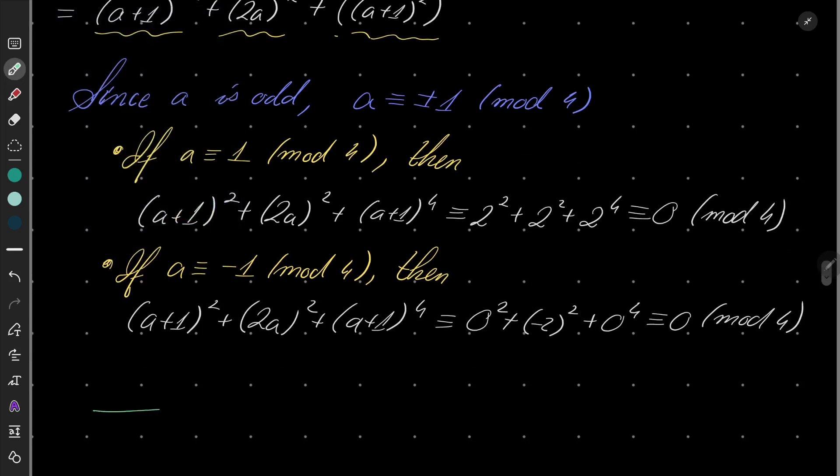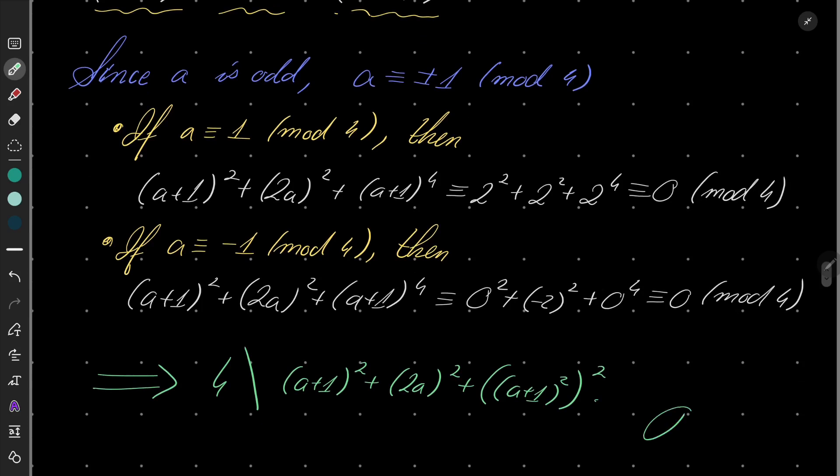which exactly means that 4 divides (a+1)^2 + (2a)^2 + ((a+1)^2)^2. And that closes our proof. Thank you for watching and I will see you in the future. Goodbye.